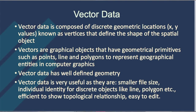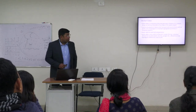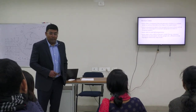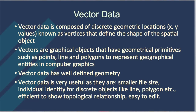Next is vector data. Vector data consists of discrete geometric locations. These vectors are graphical objects that have geometric primitives such as points, lines, and polygons. Because vector data consists of discrete geometric locations, it has a well-defined geometry, which doesn't exist in raster data since raster is an array of picture cells.